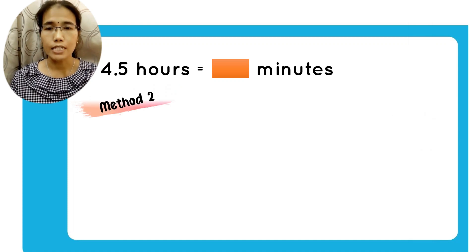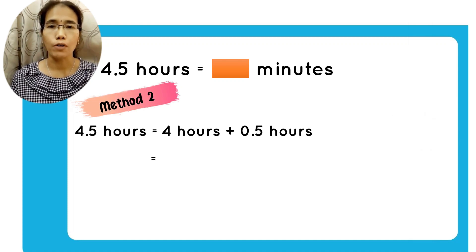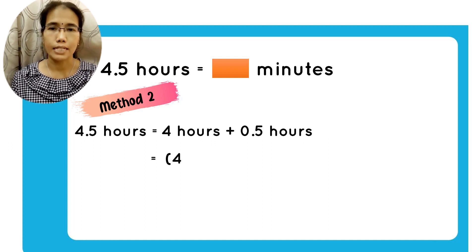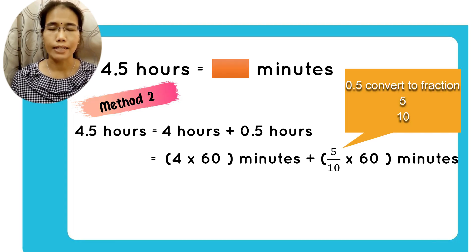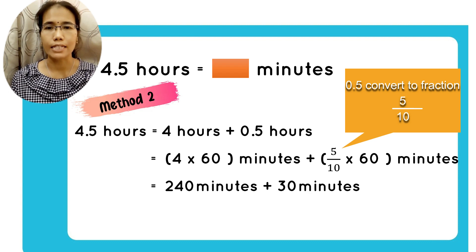There's also another method to do this. What you can do is 4.5 hours, you split them to 4 hours and 0.5 hours. Then you multiply with 60. 4 times 60, you will have 240 minutes. 0.5 times 60, you will have 30 minutes. When you add them, you will get 270 minutes.